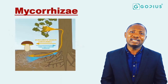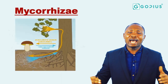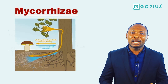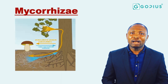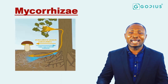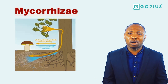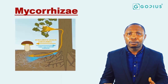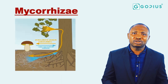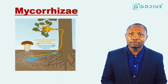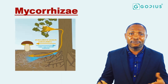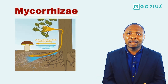The next example is mycorrhizae, which is an association between flowering plants and a fungus known as mushroom. The flowering plant has roots but cannot penetrate deep into the soil, whereas the hyphae of the mushroom can. So the flowering plant depends on the mushroom to get soil nutrients and water, while the mushroom depends on the roots of the flowering plant to gain carbohydrates for its feeding. That's how both of them gain from each other.